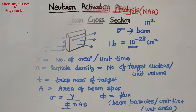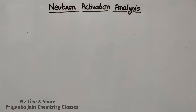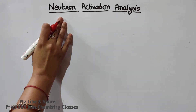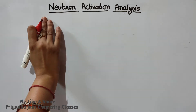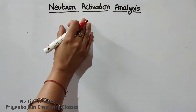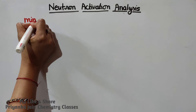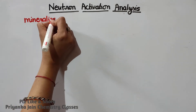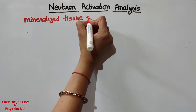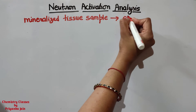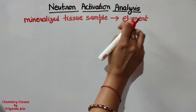Now we move toward neutron activation analysis. NAA is a very important technique of analytical chemistry used for elemental analysis. We can study it both in analytical chemistry and in nuclear chemistry. If we are given a sample — like a mineralized tissue sample — and we have to find out what element traces are present in very small amounts, that can be detected by neutron activation analysis.